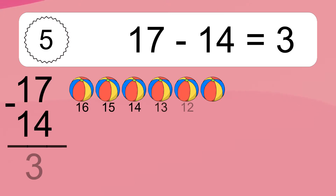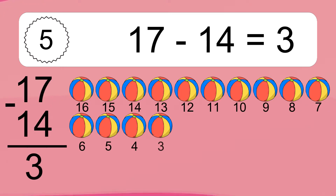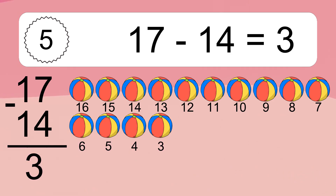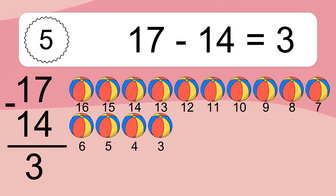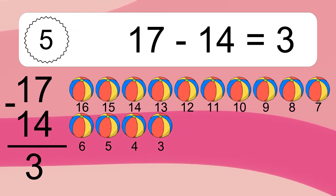17 minus 14 equals what? 17 minus 14 equals 3. Let's count it. 16, 15, 14, 13, 12, 11, 10, 9, 8, 7, 6, 5, 4, 3.